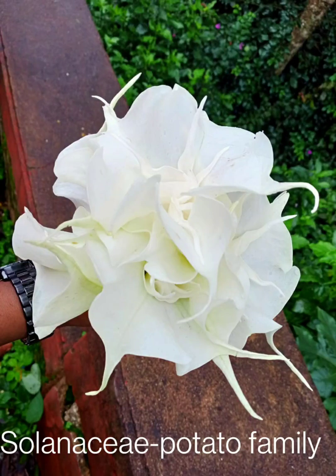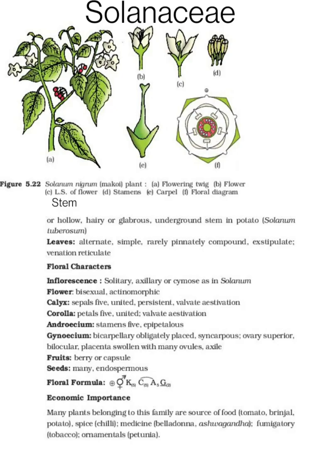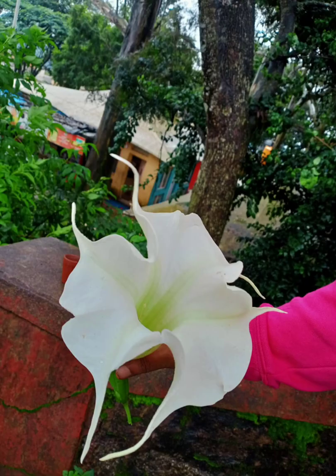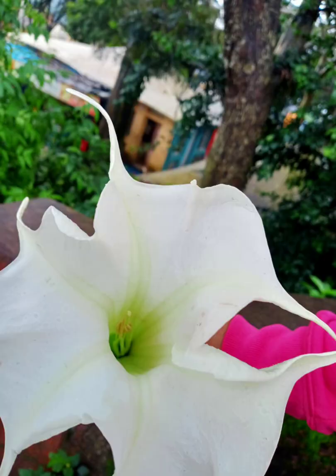Welcome everyone. In this video let us discuss Solanaceae, which is commonly called the potato family. This is the NCERT information. Let us look at the NCERT information with the help of a live plant for a better understanding. We have to talk about the vegetative characters and the floral characters. I'm taking a Datura plant as a reference plant to study Solanaceae. Datura is commonly called thorn apple. Here are the flowers of the Datura plant.